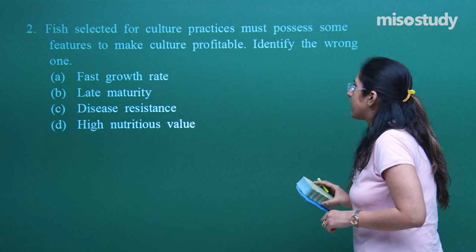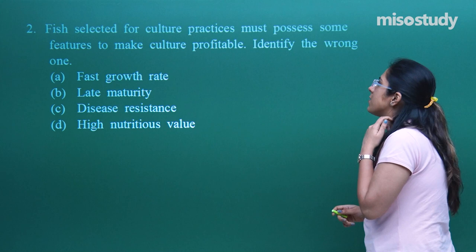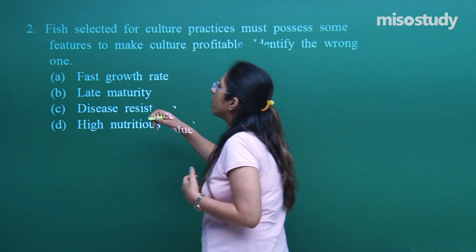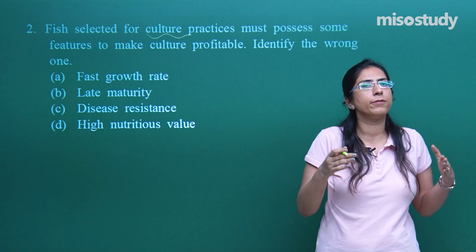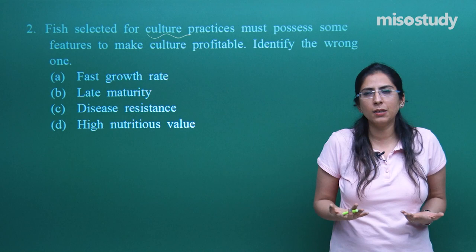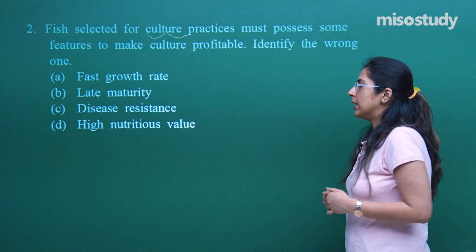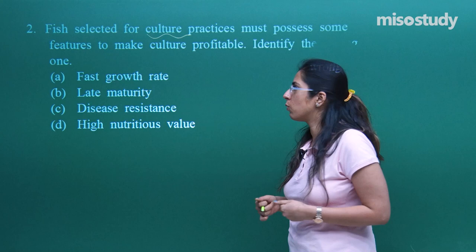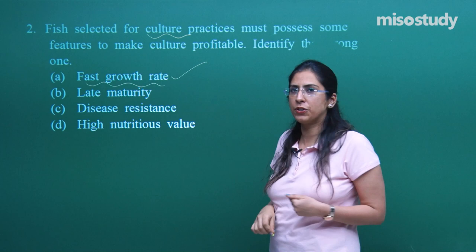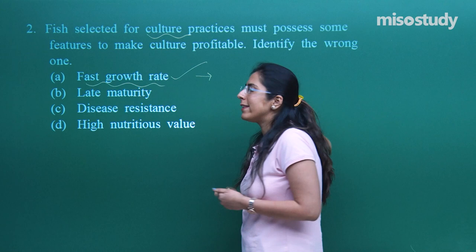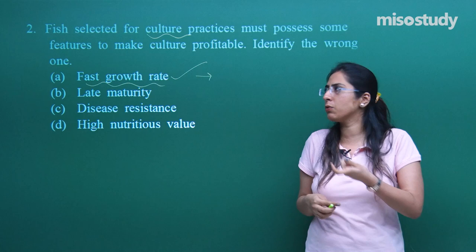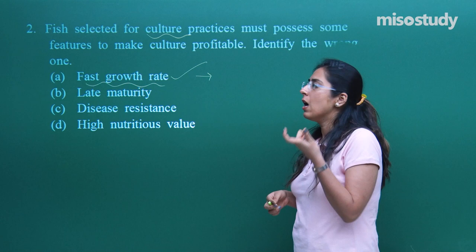Now read question 2: fish selected for culture practices must possess some features to make culture profitable — identify the wrong one. We are going for the culturing of fish, meaning we want fish in bulk amount. Fish is important for protein. Option A is fast growth rate — yes, the fishes should have a fast growth rate. This is important when we talk about fish culture; it means healthy fingerlings will be produced and good quality fish with good protein content will result.